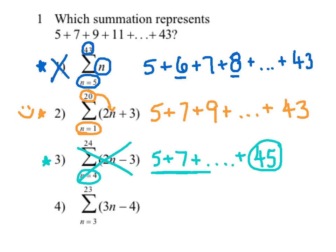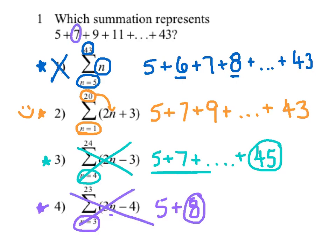There's just as much to learn from the wrong answers as the right answer sometimes. For choice four, substituting n equals three: three times three is nine, minus four is five. Then substituting n equals four: three times four is twelve, minus four is eight. That number does not match the second term of the original series, so we eliminate choice four. We can go back and celebrate — number two is the correct solution.